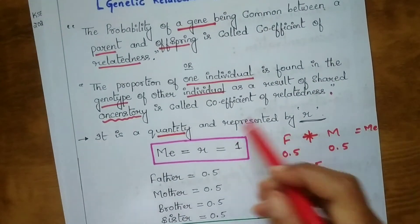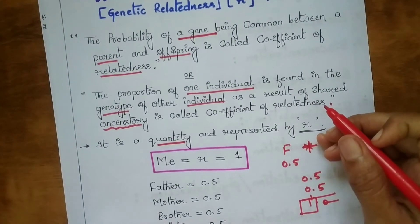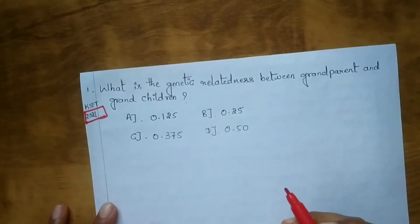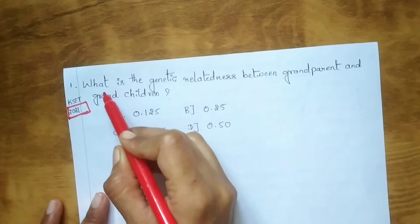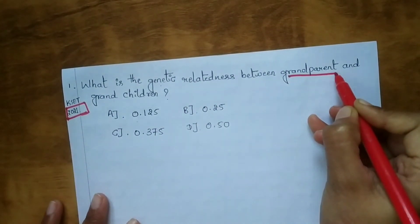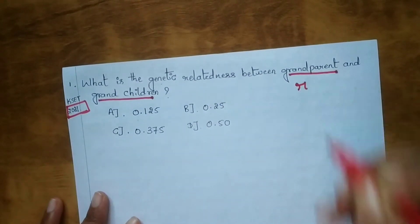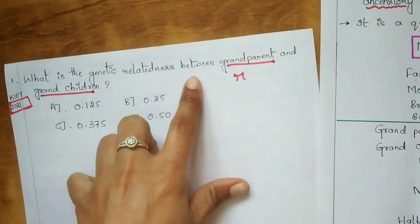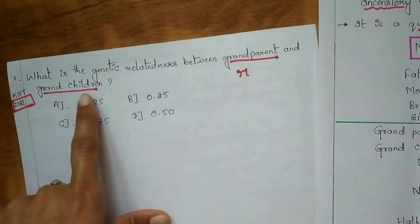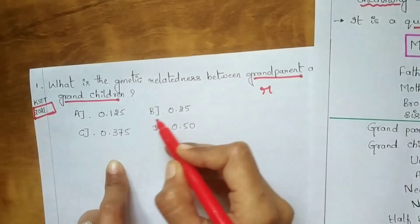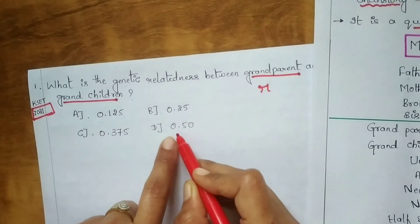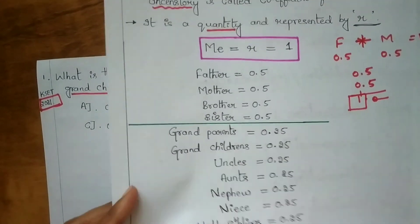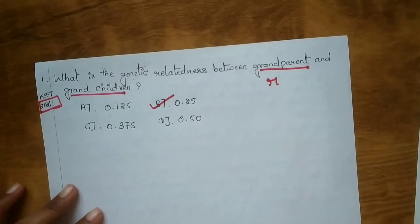Always imagine yourself as 1. Now here is a question from CSIR 2021 — it is a direct question: what is the genetic relatedness between a grandparent and grandchildren? The options are: A) 0.125, B) 0.25, C) 0.375, D) 0.550. The answer is B, that is 0.25, because grandparent and grandchildren have a coefficient of relatedness of 0.25.